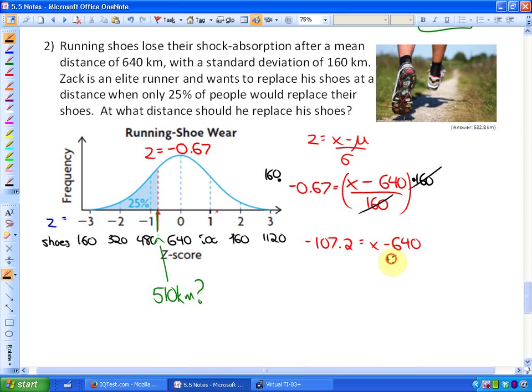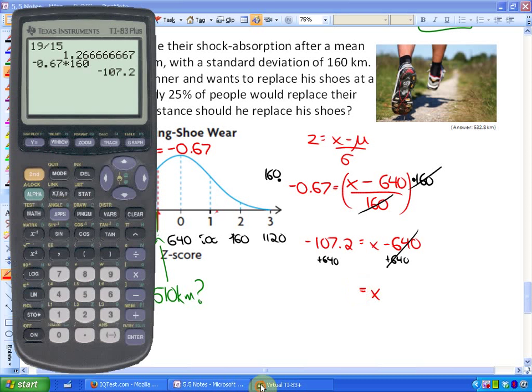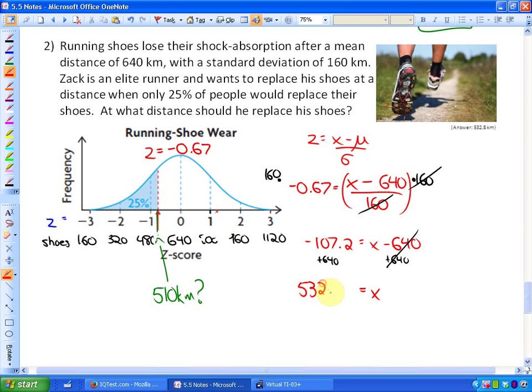So at this point we have negative 107.2 is equivalent to x minus 640. The last step of algebra is to add 640, so we would have that the distance, or the data value, where he wants to replace his shoes would be roughly 532.8, which is close to our estimate, a little bit off. 532.8 kilometers is when Zack wants to replace his shoes. So there's the usefulness of statistics and z-scores.